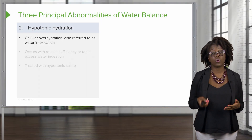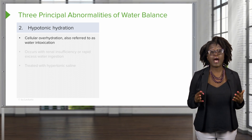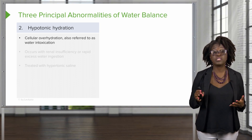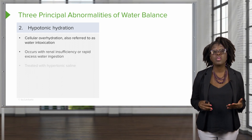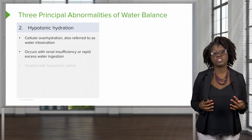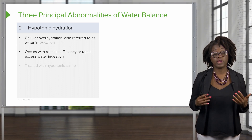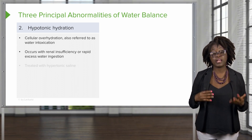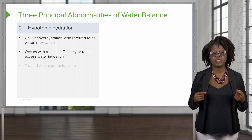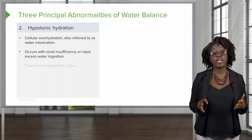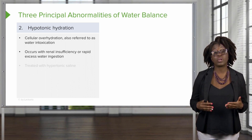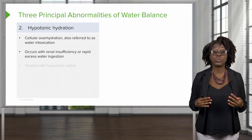The second disorder of water balance is hypotonic hydration, also sometimes referred to as water intoxication or cellular overhydration. This can occur when there is renal insufficiency, but more likely this occurs when there is rapid excess water ingestion, such as during a water drinking contest where contestants are trying to drink as much water as fast as possible. The extracellular fluid osmolality is going to drop, causing a condition known as hyponatremia, or low sodium levels.